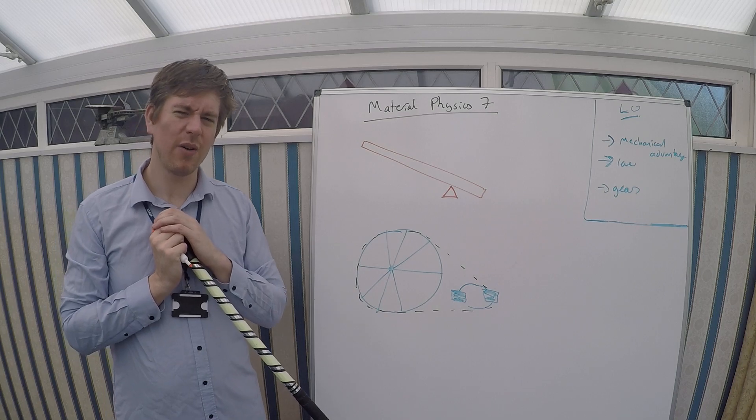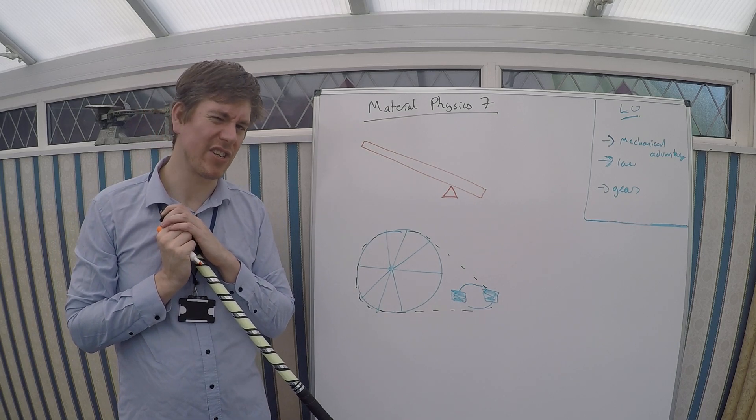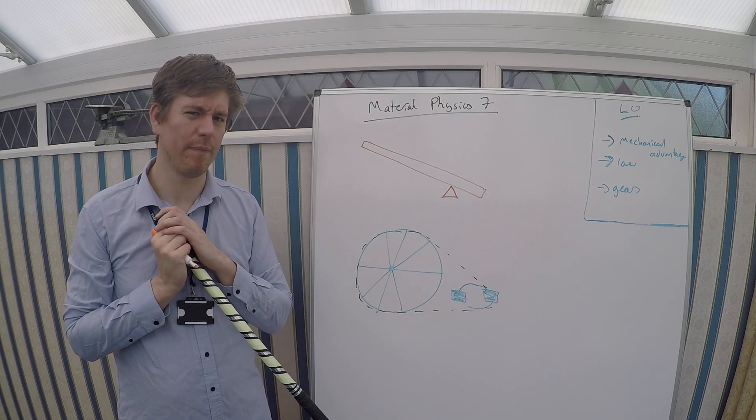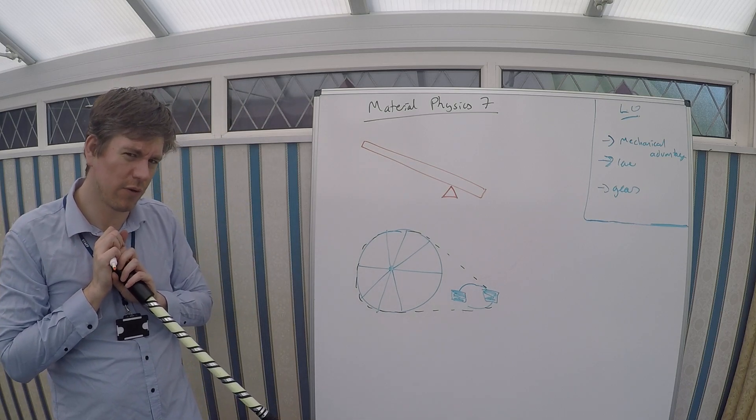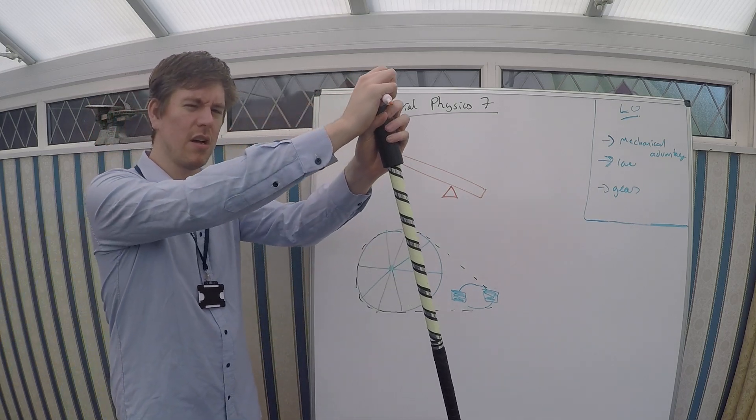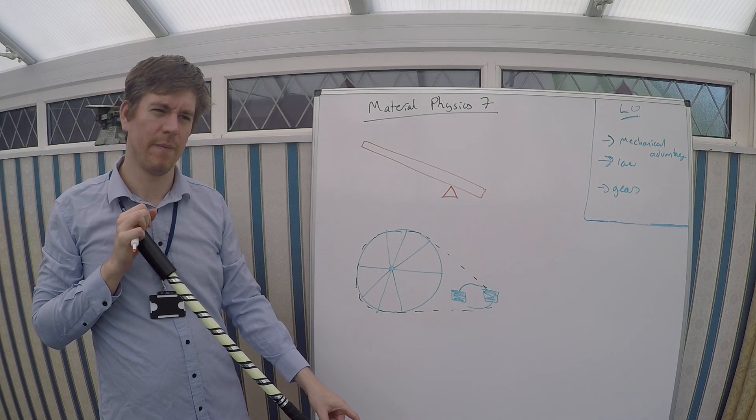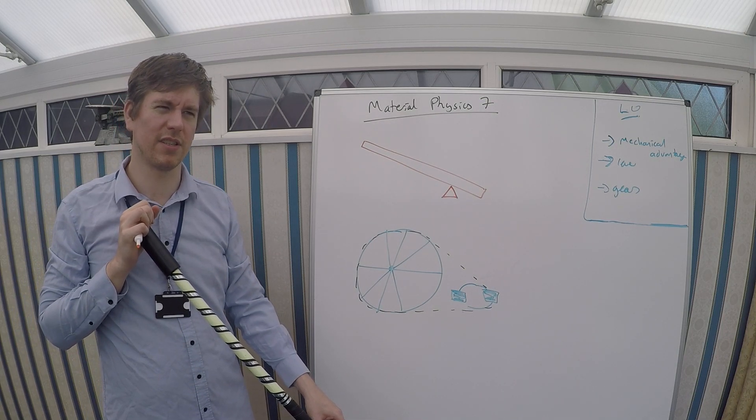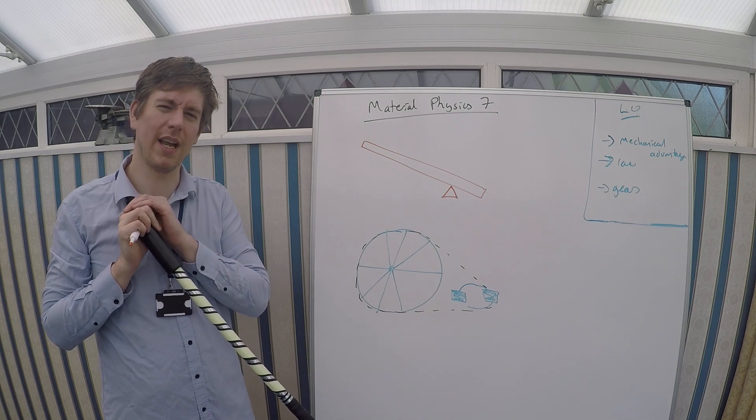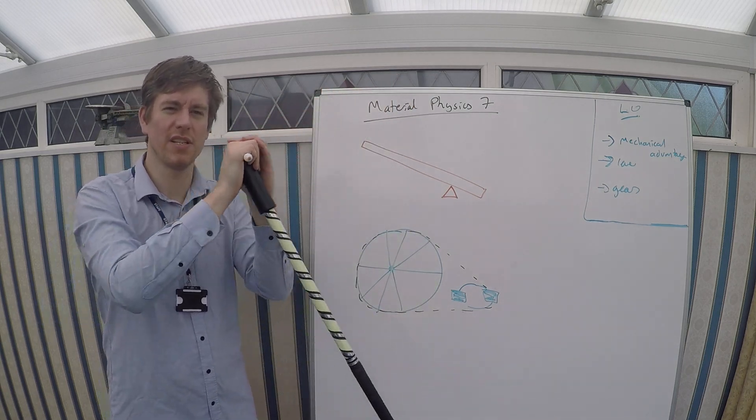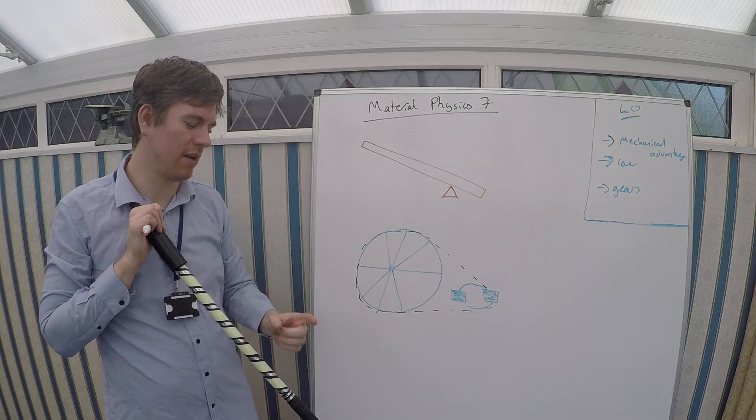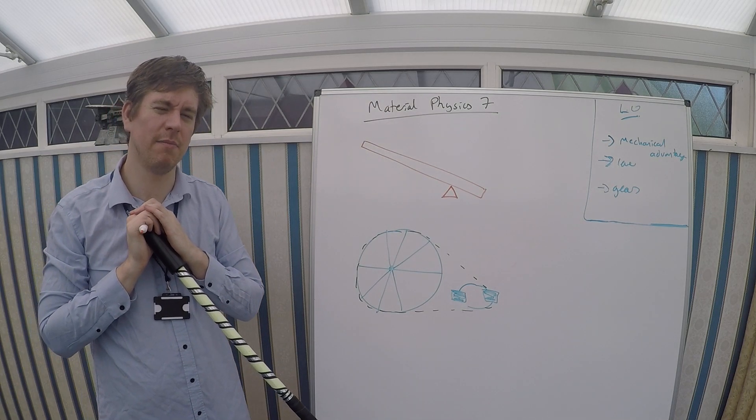I always thought that levers were magic. I couldn't really understand them, because if I apply a force at one end of a lever, I can make a much greater force happen at the other end of the lever. But that seems to sort of not work. How am I getting more force? How am I generating extra force just by making it from further away? It doesn't seem right.